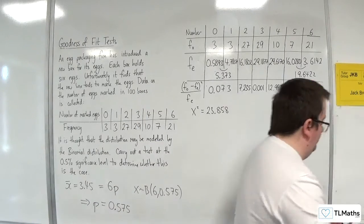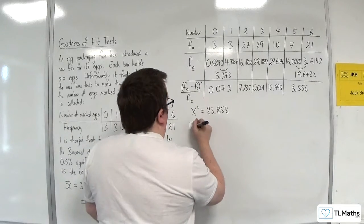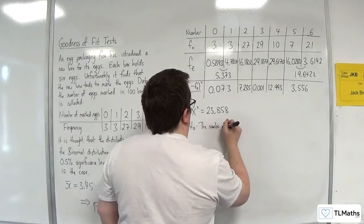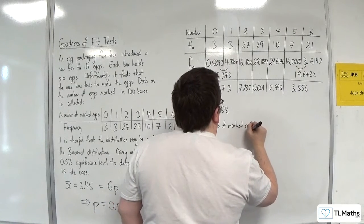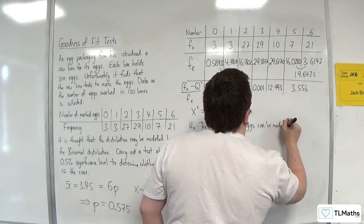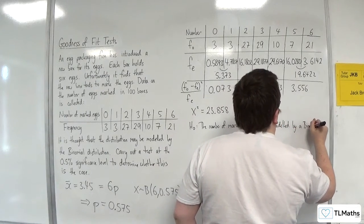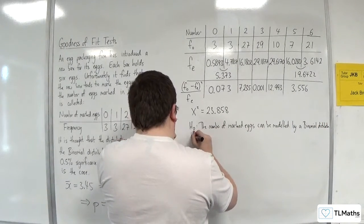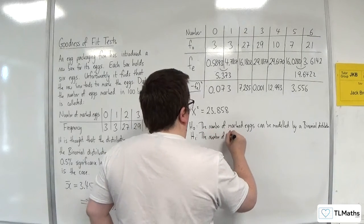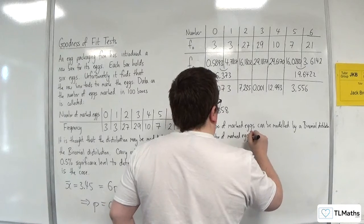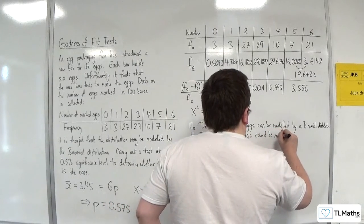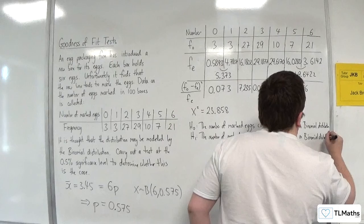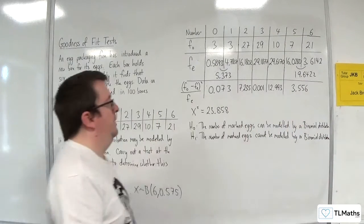So the chi-squared statistic: 0.073 plus 7.235 plus 0.001 plus 12.993 plus 3.556, equals 23.858. The null hypothesis would say the number of marked eggs can be modeled by a binomial distribution. And H1, the number of marked eggs cannot be modeled by a binomial distribution.